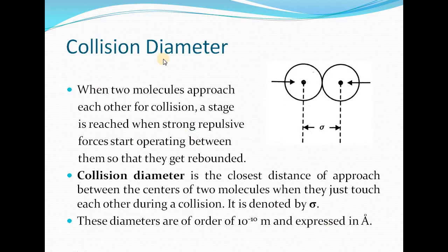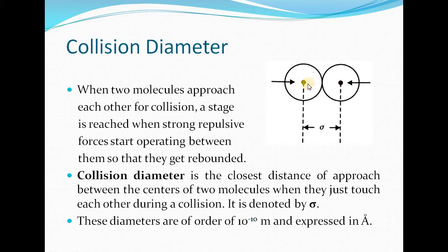The next topic is collision diameter. As the name indicates, it is the diameter at the time of collision. When two molecules approach each other, a stage is reached when strong repulsive forces start operating between them so that they rebound. Collision diameter is defined as the closest distance of approach between the centers of two molecules when they are just touching each other during a collision, and it is denoted by the symbol sigma (σ).